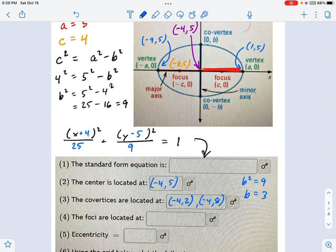The foci are located 4 left and 4 right from the center. That's that 4 value up here for c. So this is going to be negative 8 comma 5 to the left. And if I'm going to the right, that's just going to be at 0 comma 5. And what do we have left? Eccentricity.